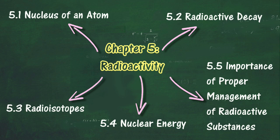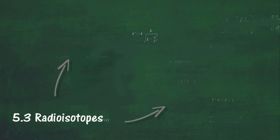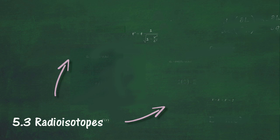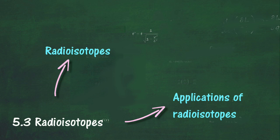In Section 5.3, we will learn about the uses of radioisotopes. At the end of this section, you should be able to define radioisotopes, name examples of radioisotopes, and describe applications of radioisotopes.